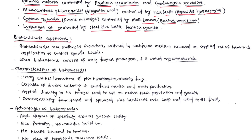The bio-herbicidal approach uses microorganisms — mostly fungi — whose spores are cultivated, multiplied in artificial carrier media, and applied like a herbicide over crop foliage. Unlike the classical approach where insects are self-operating after release, bio-herbicides involve culturing pathogen inoculum in artificial media and applying it repeatedly, similar to how herbicides are applied.